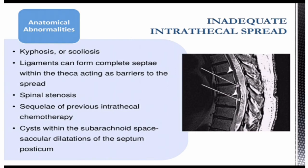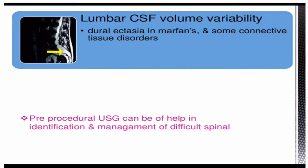Anatomical abnormalities such as kyphosis and scoliosis can also contribute to failure. Ligaments can form complete septa within the thecal sac, acting as barriers to drug spread. There may be spinal stenosis, sequelae of previous intrathecal chemotherapy, or cysts within the subarachnoid space causing saccular dilatations of the septum posticum. All of these can contribute to a failed or incomplete block. Pre-procedural ultrasonography can help in identification and management of difficult spinal anesthesia.